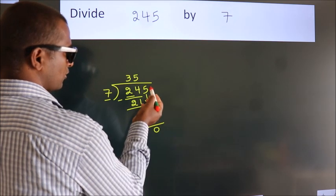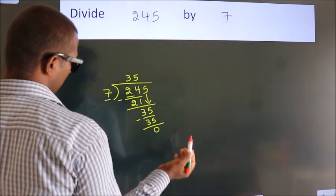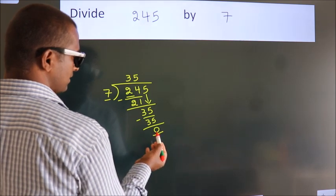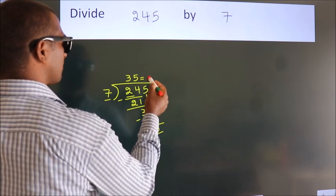After this, there are no more numbers to bring down. We got remainder 0, so this is our quotient.